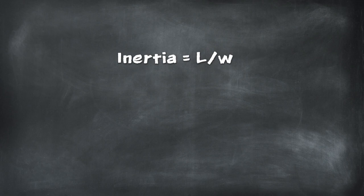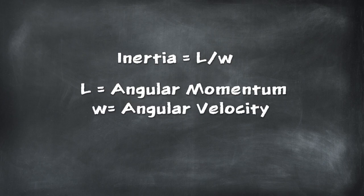So, how do we calculate inertia? Pretty simple. Inertia is equal to L over W, with L being angular momentum, and W representing angular velocity.